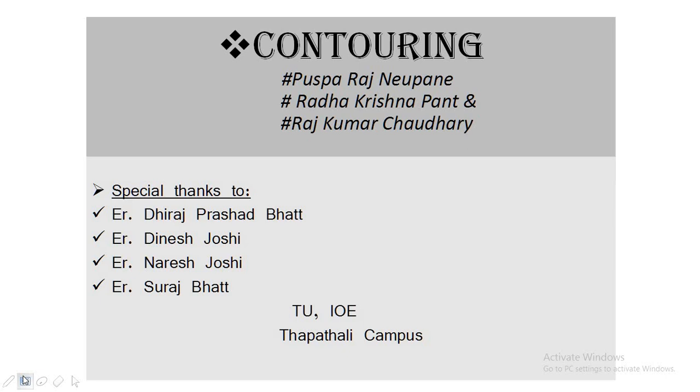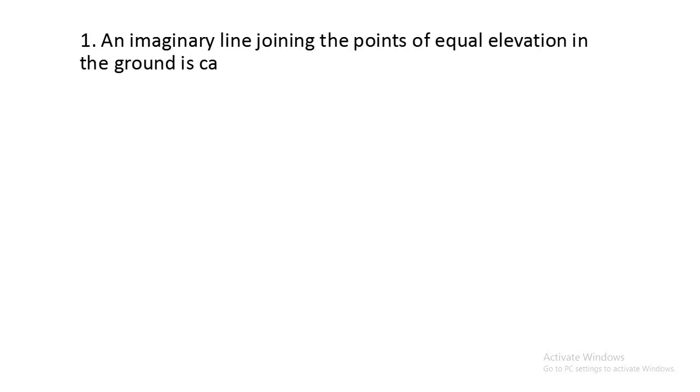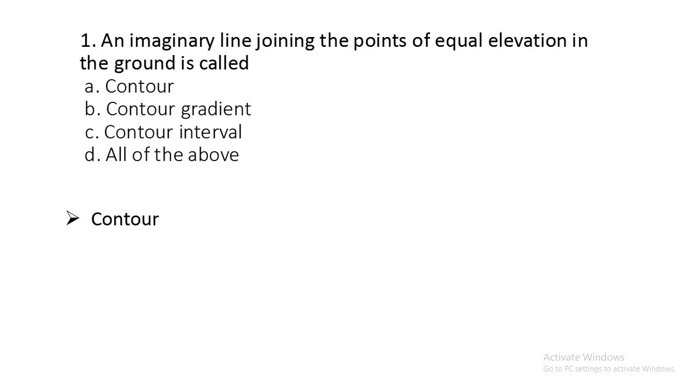Question number one: An imaginary line joining the points of equal elevation in the ground is called: contour, contour gradient, contour interval, or all of the above? It is a contour.